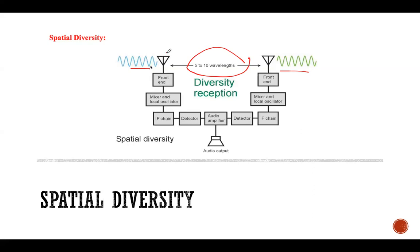If one antenna is located here, the other will be at a slightly different position. Since the positions are different, the signals received by these two antennas are also different. If one signal undergoes a very deep fade, the other signal might not undergo the same level of fading. So there is an option to choose the better signal — that is spatial diversity.